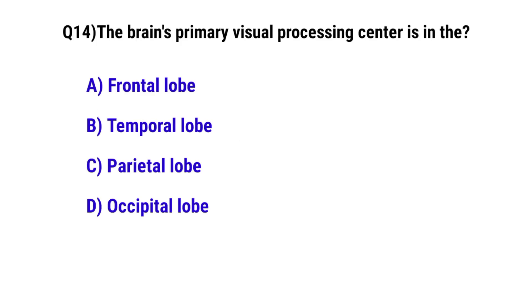Question number 14. The brain's primary visual processing center. The correct option is D: Occipital lobe.